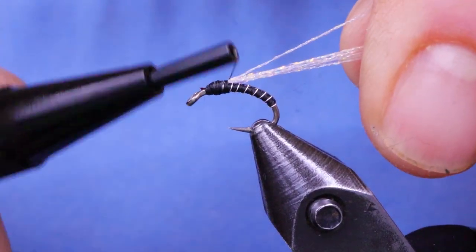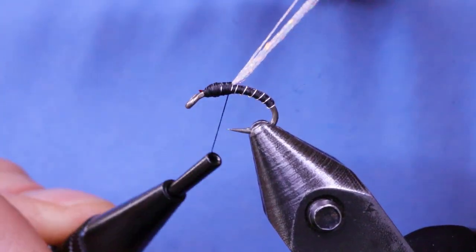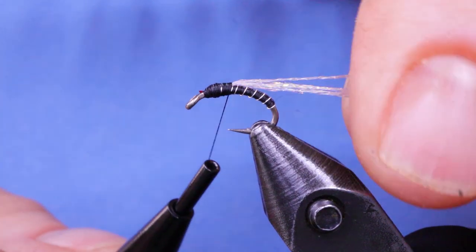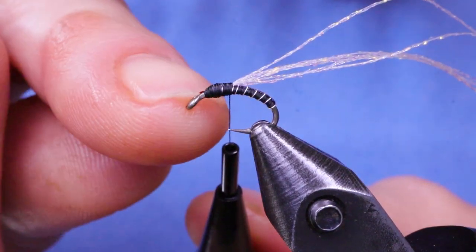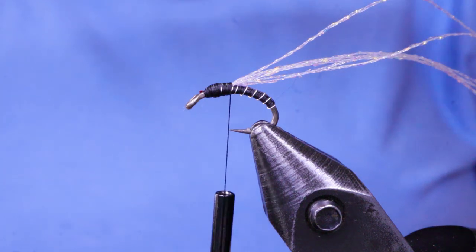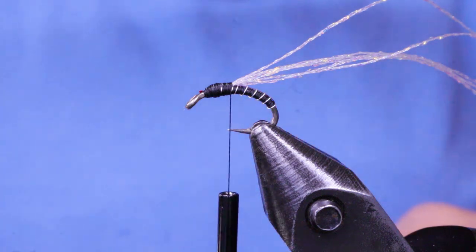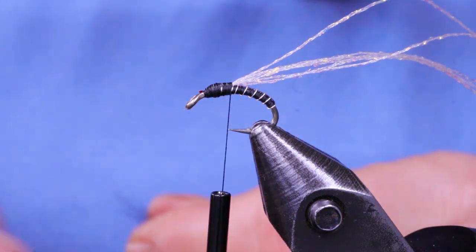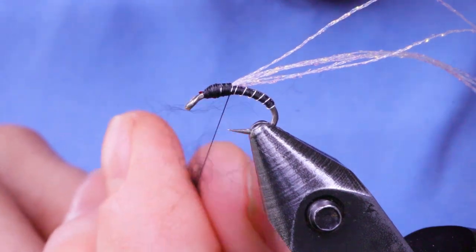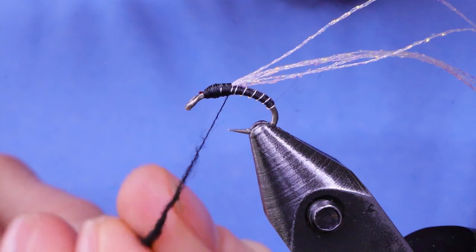And then I'm going to bring it back as far as I want my thorax to start, right there. You still want to maintain a little bit of space here at the front for the head as well. Next I'm going to take my superfine dubbing. Any black dubbing is fine. This is superfine. I want to make a really tight little noodle. So this superfine helps do that.